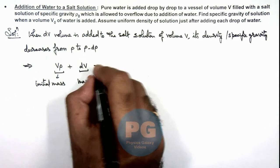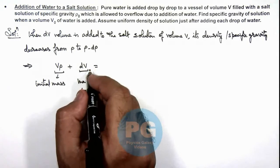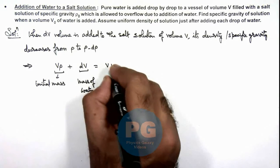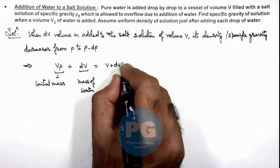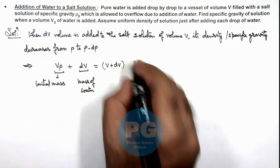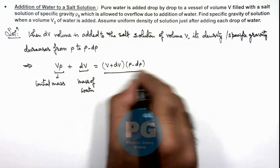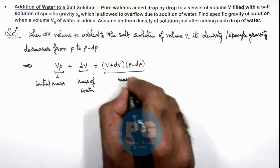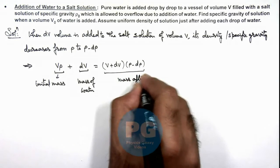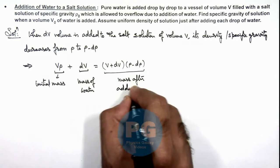This should be equal to, as the volume becomes V plus dV after adding the water and density changes to ρ minus dρ. This is the mass after adding water.